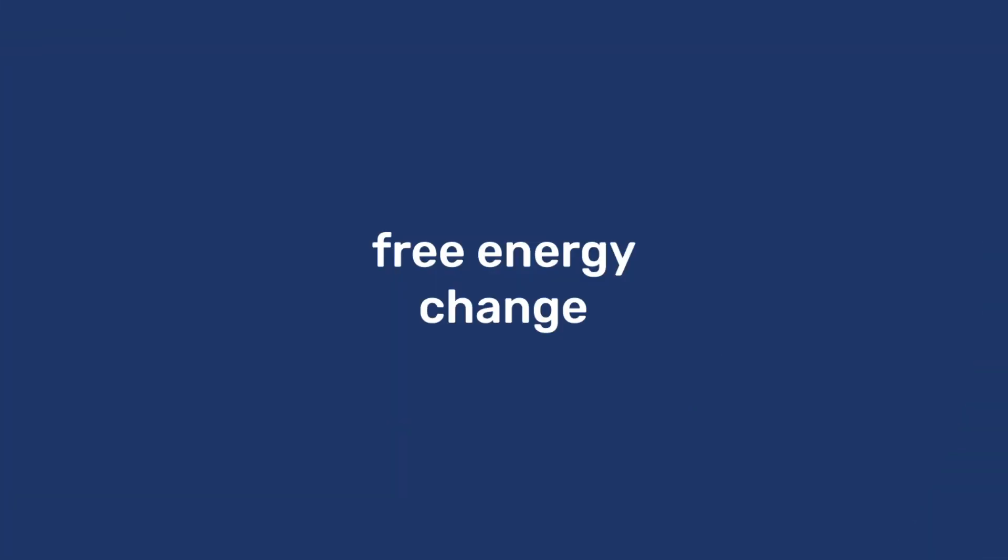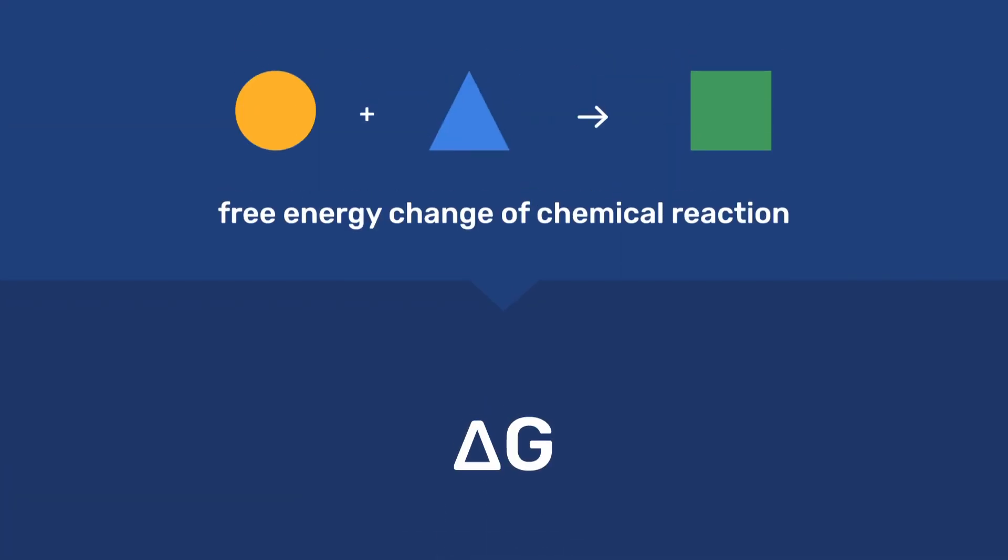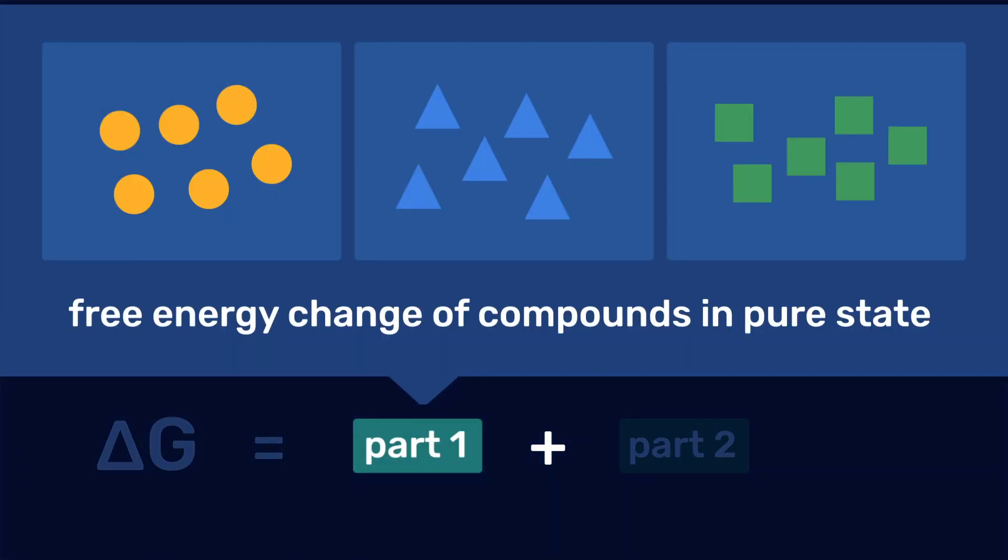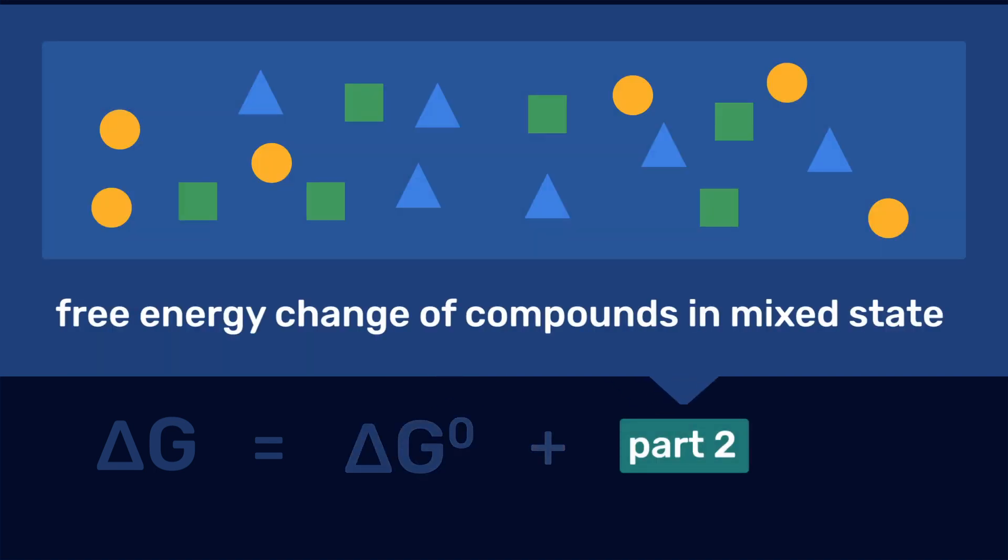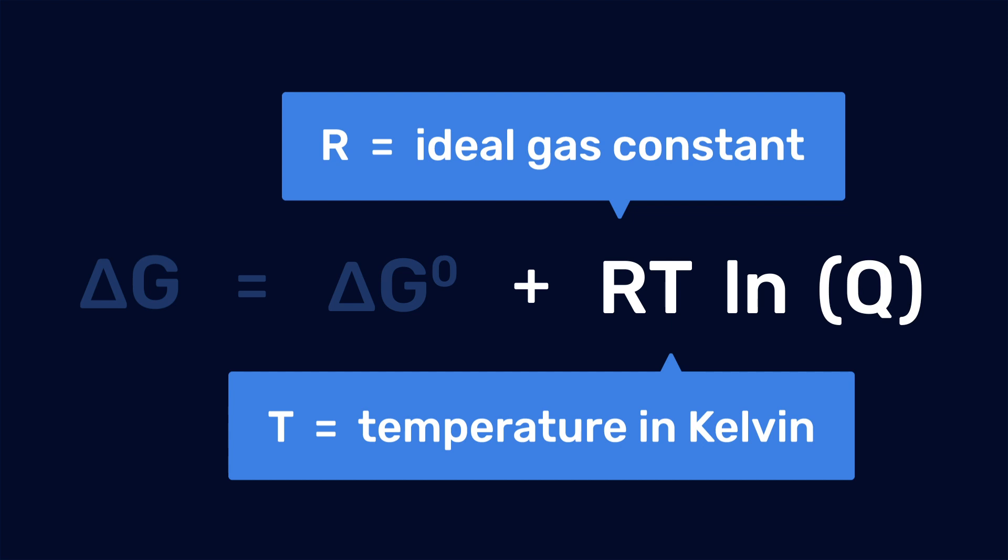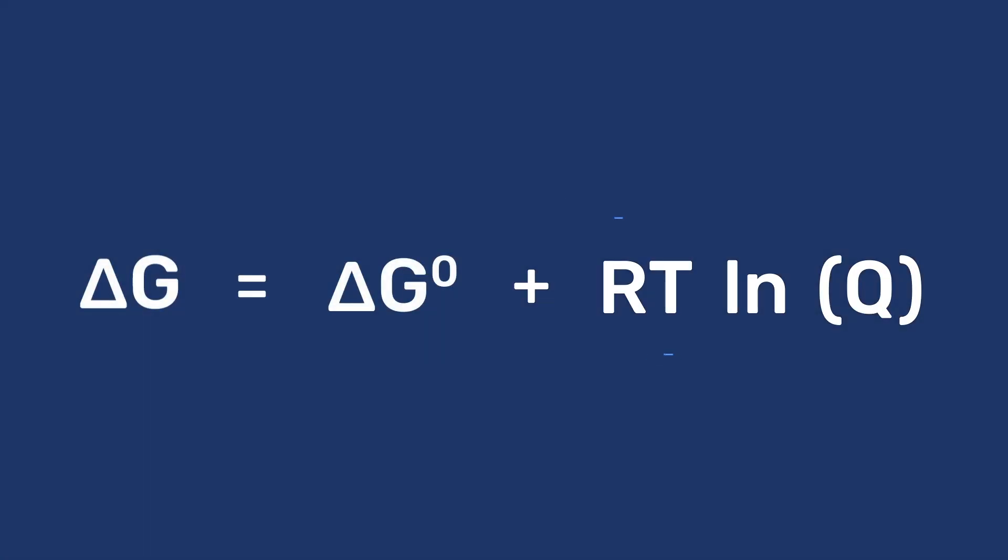The free energy change, ΔG, of a chemical reaction can be subdivided into a first part relating to the compounds in their pure state, ΔG0, and a second part accounting for the mixing of these compounds, RTlnQ, giving ΔG = ΔG0 + RTlnQ.